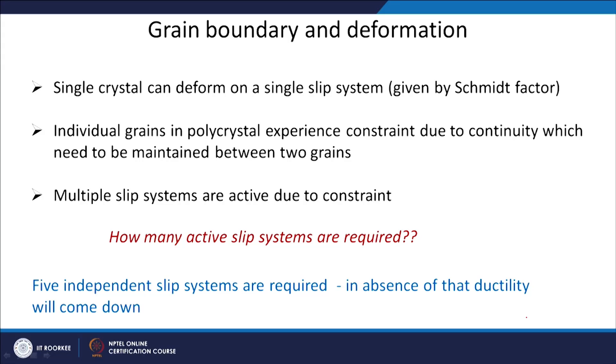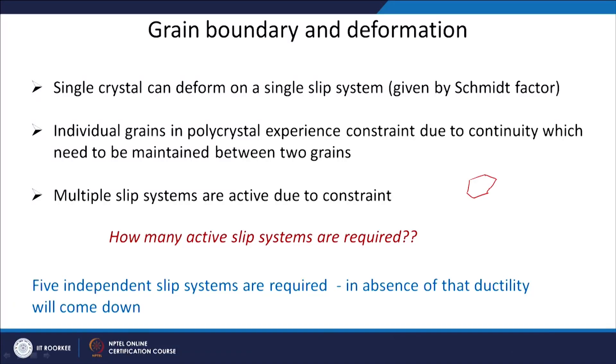This is how dislocations get stopped by the grain boundary, and that is how grain boundaries strengthen the material. A single crystal can deform on a single slip system given by the Schmid factor. Individual grains in a polycrystal experience a constraint due to continuity that must be maintained between the two grains. If I have a single crystal, the dislocation will go and create a step at the free surface. But when you have a polycrystalline material, take the simple example of hexagonal grains arranged close to each other.